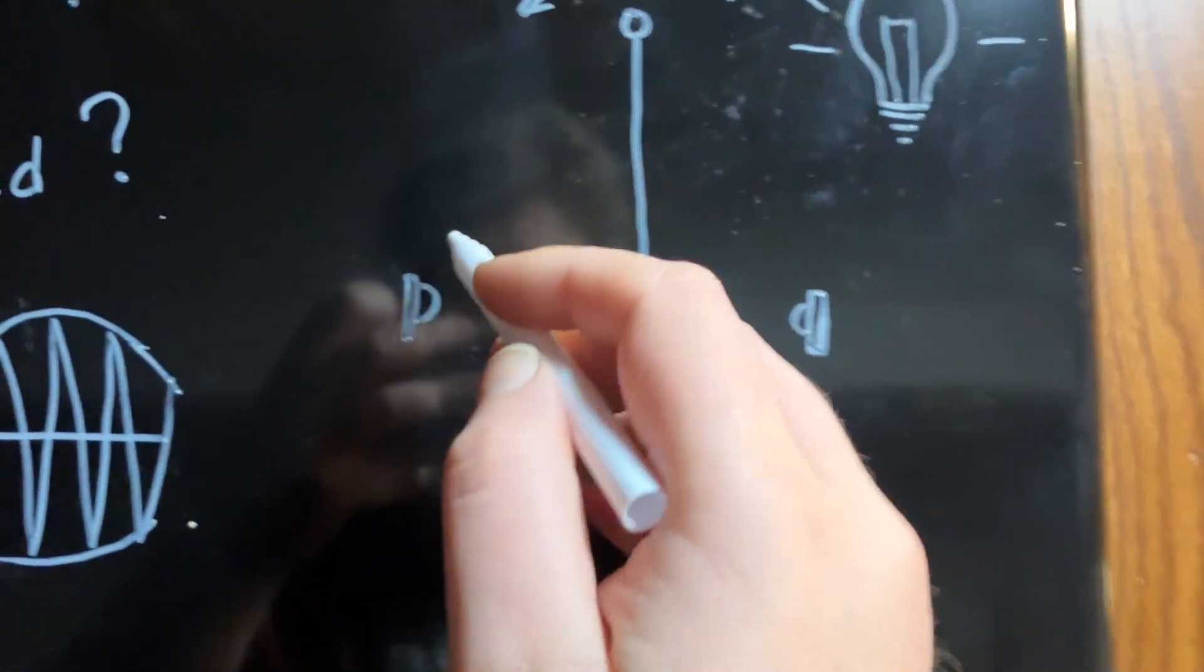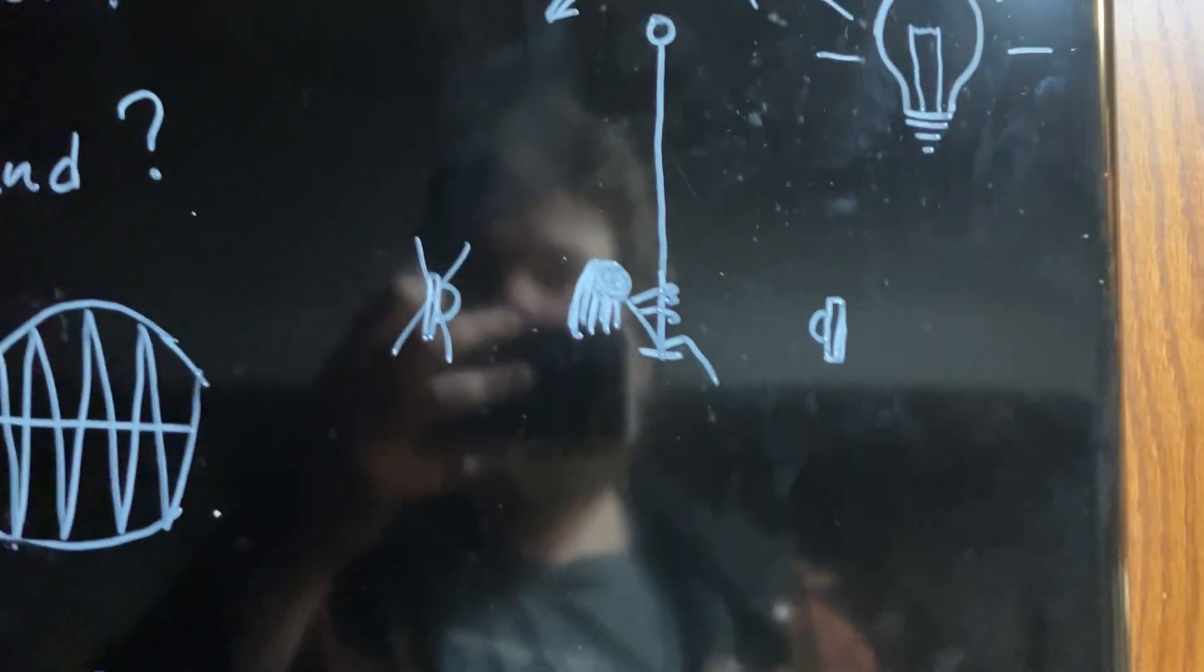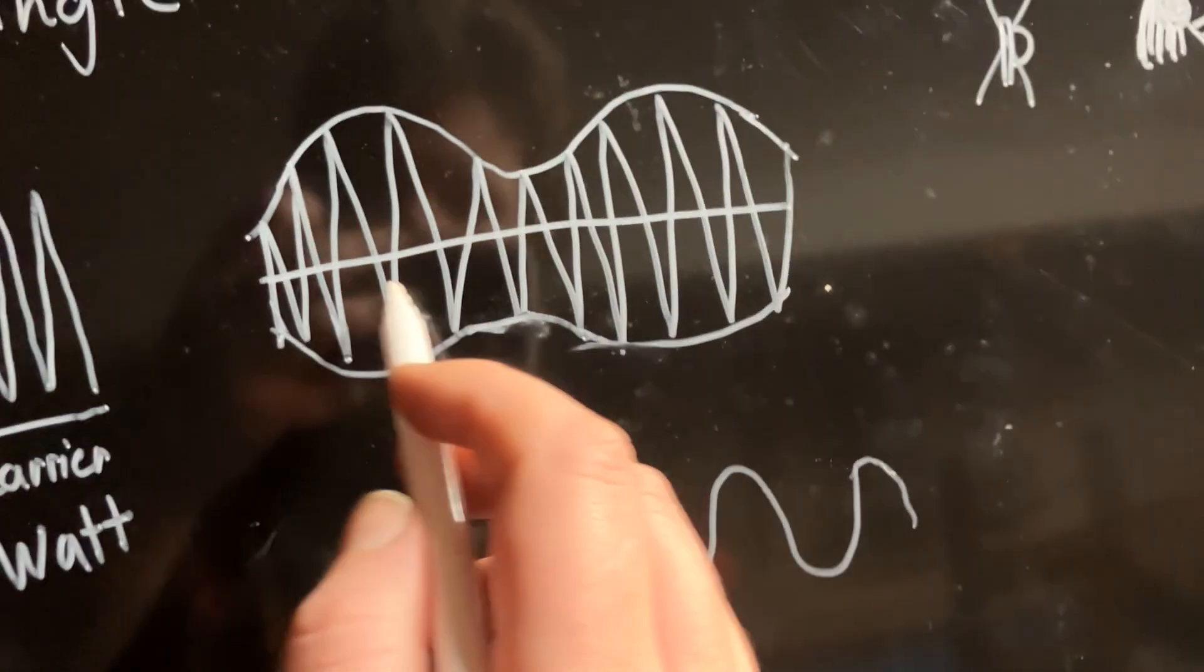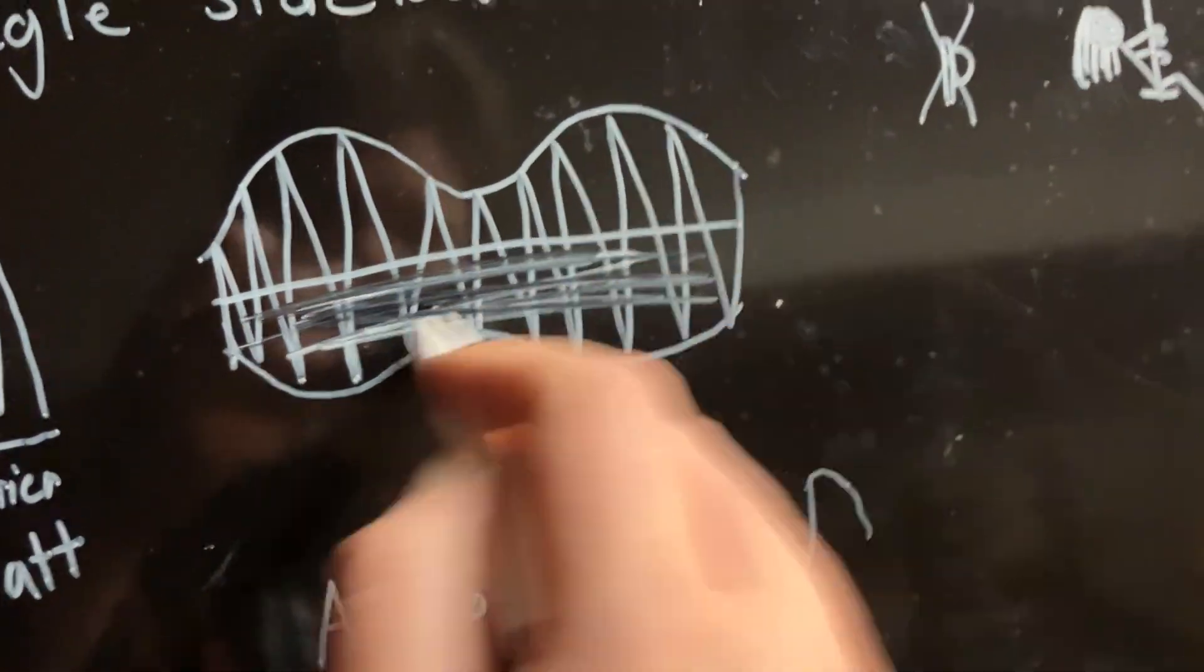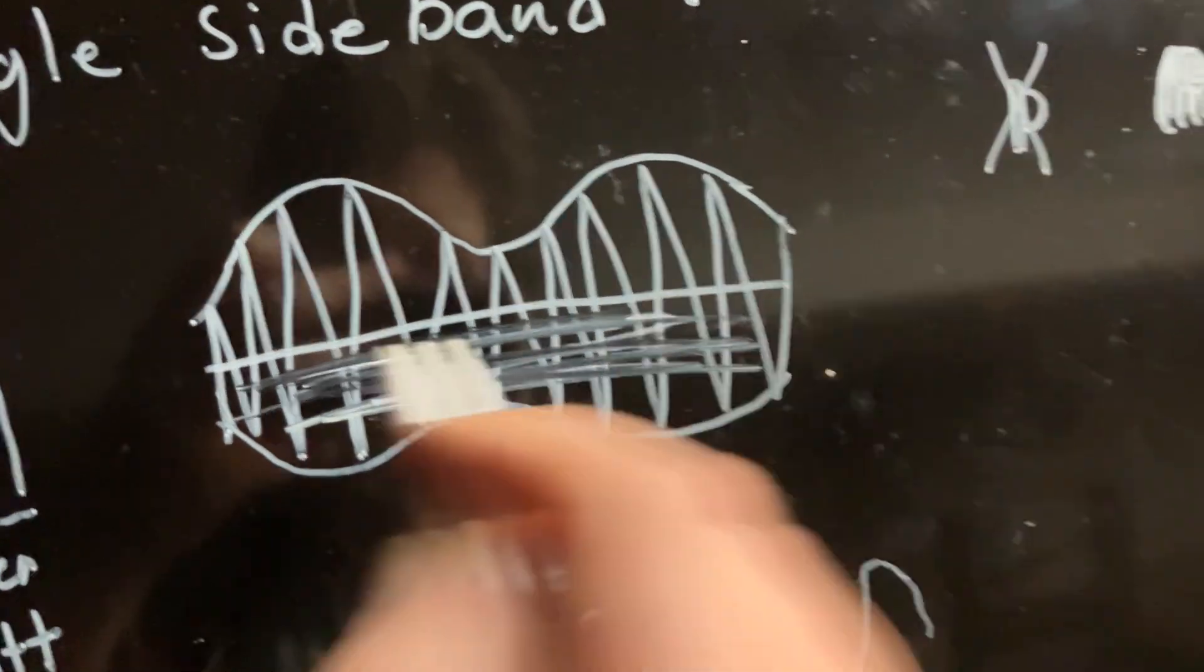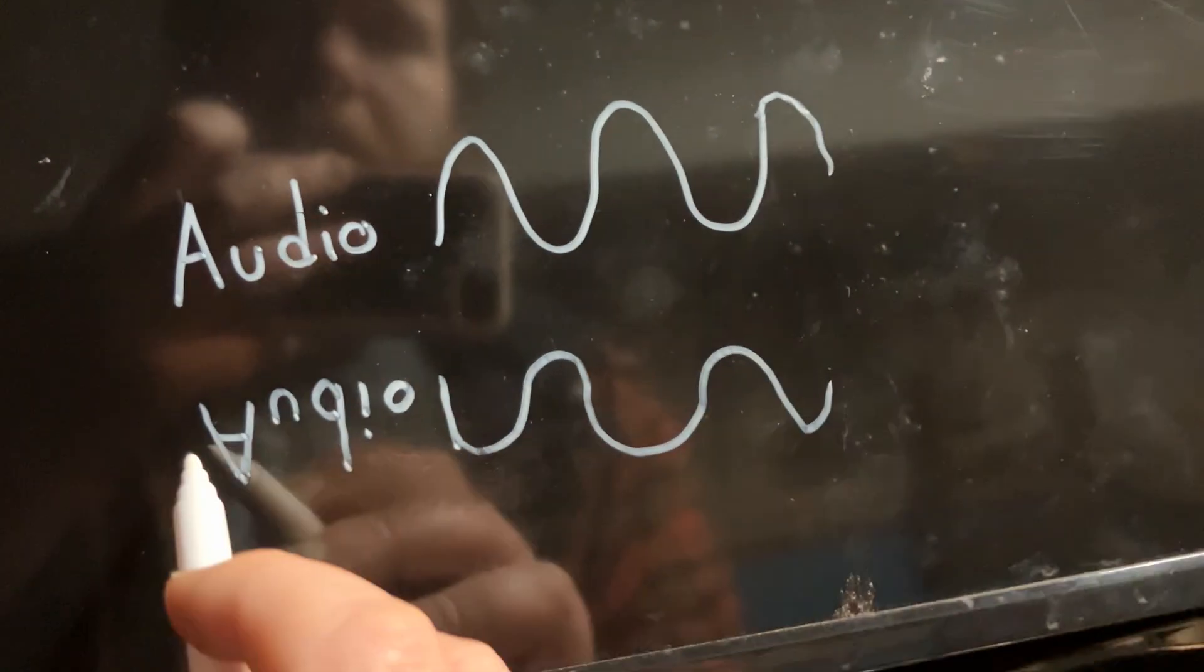What we're doing with single sideband is we're actually getting rid of this here and focusing entirely on this part. So this audio goes through and this we really don't need.